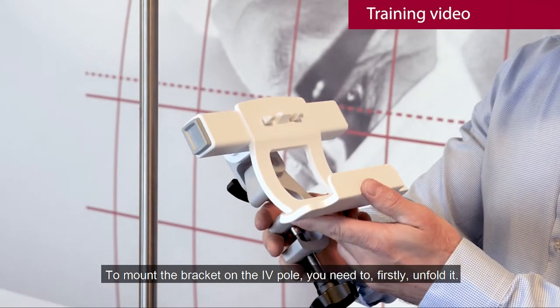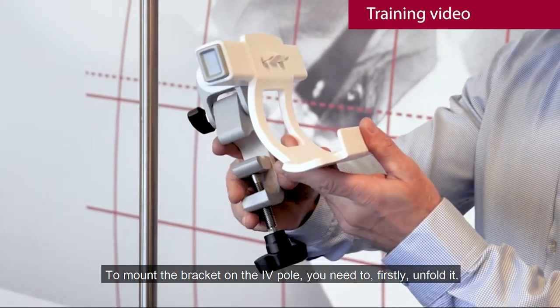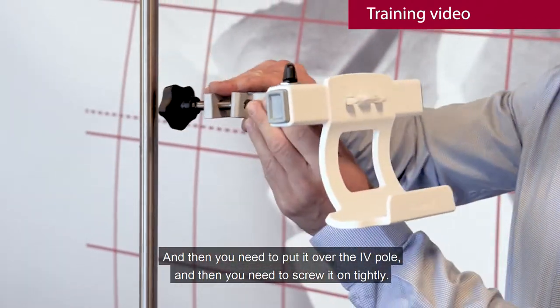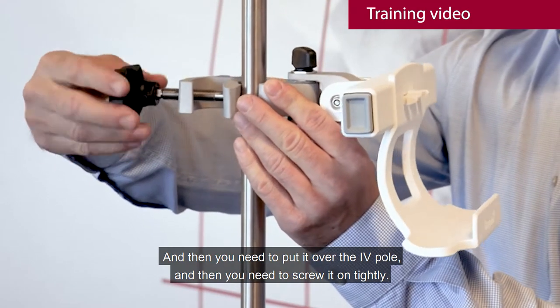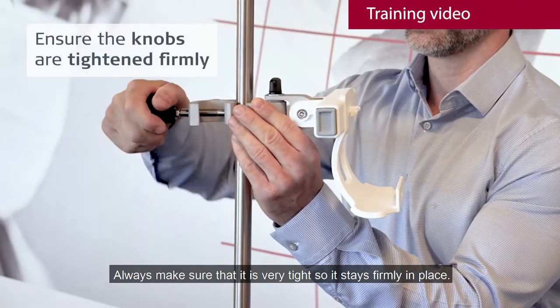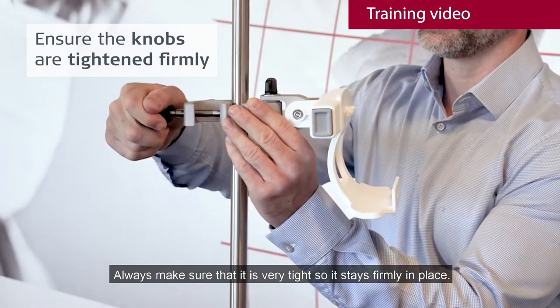To mount the bracket on the IV pole, you need to first unfold it, then put it over the IV pole and screw it tightly. Always make sure that it's very tight so that it stays firmly here.